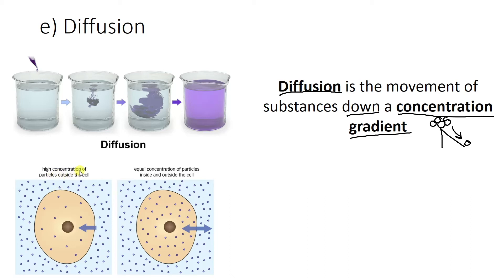Now it says up here we have a high concentration of particles outside the cell compared to the inside. Because I've got 12 in the middle and I'm not going to count the outside. There is more than 12 on the outside.